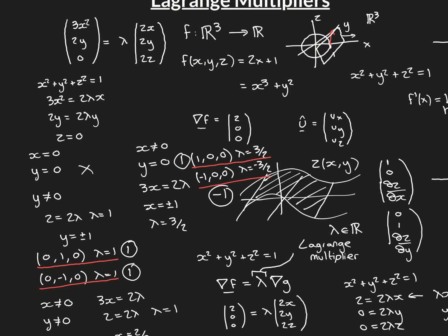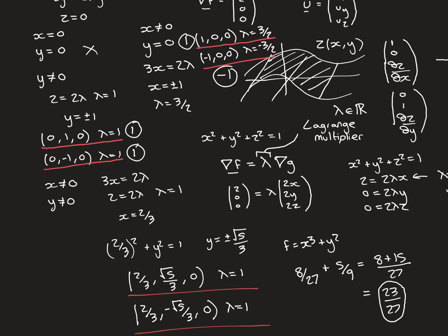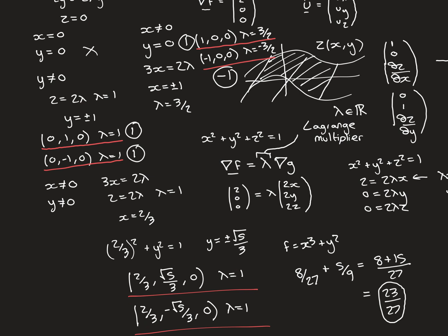Our guesses were right. The maximum value this function obtains over the unit sphere is 1, obtained at three points: (0, 1, 0), (0, -1, 0), and (1, 0, 0). The minimum value is -1, obtained at only one point: (-1, 0, 0). The two additional stationary points at (2/3, ±√5/3, 0) are neither global maxima nor minima — they may be local extrema or analogous to inflection points in single-variable calculus. Thank you for watching, and I hope you found the video useful.